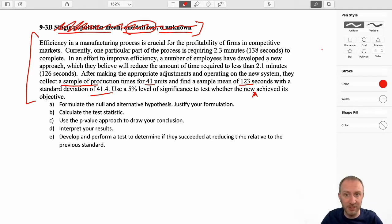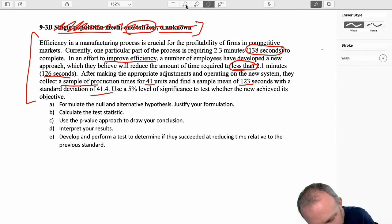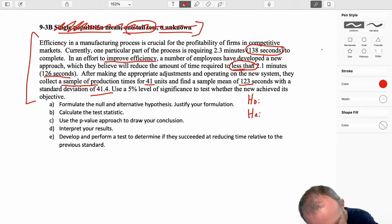Now what kind of test is it? Upper tail, lower tail, or two tail test? What is it we're trying to do? What was the objective of this exercise? Here we have this process that currently takes 138 seconds. We're trying to improve efficiency. We've developed a new approach which they believe will reduce the amount of time to less than 126 seconds. So there's the clue. Less than. I'm trying to see if I have evidence to show that my average is less than some value.